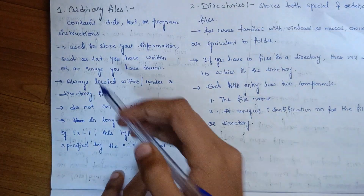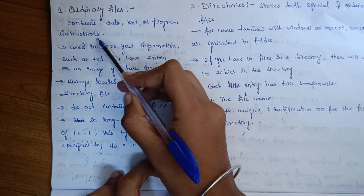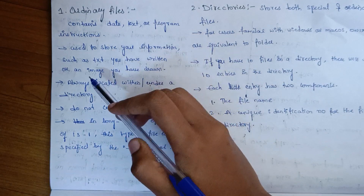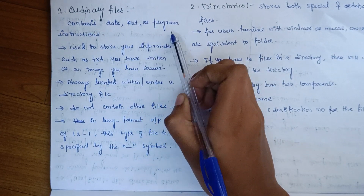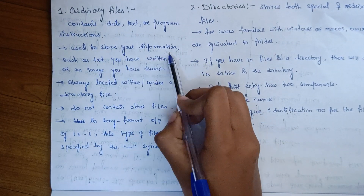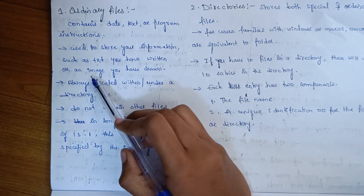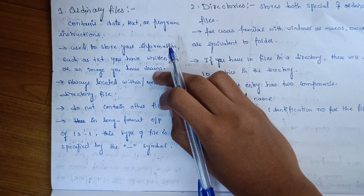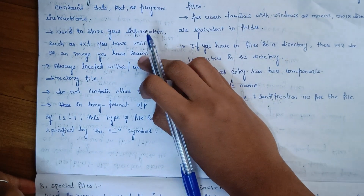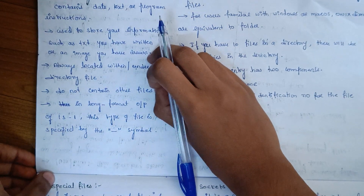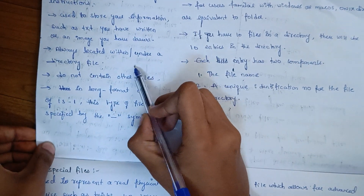Ordinary files contain data, text, or program instructions. We use ordinary files to store information such as text you have written or images you have drawn. Ordinary files are always located within directory files.